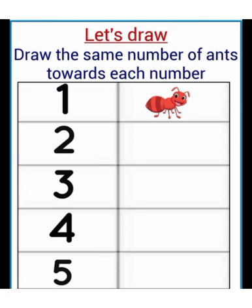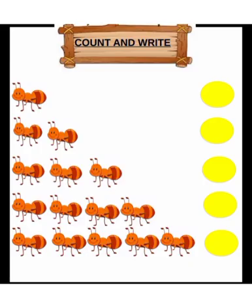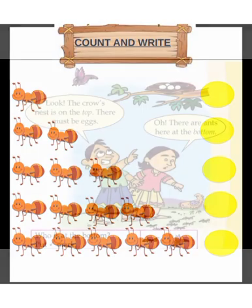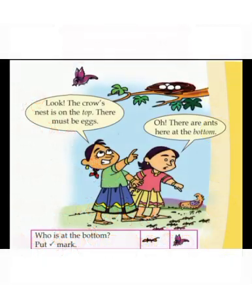Then count and write how many ants are in each row.